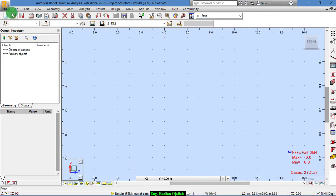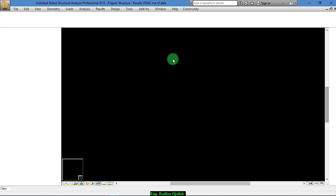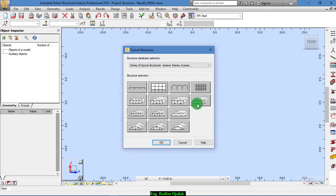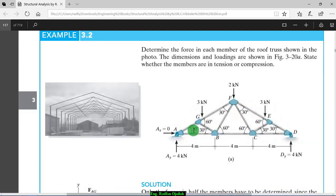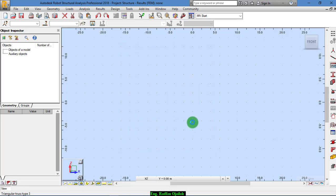We start a new project and choose truss from here. From the truss library we select the most suitable one. This one is similar to the one we need, so we select it and click OK.